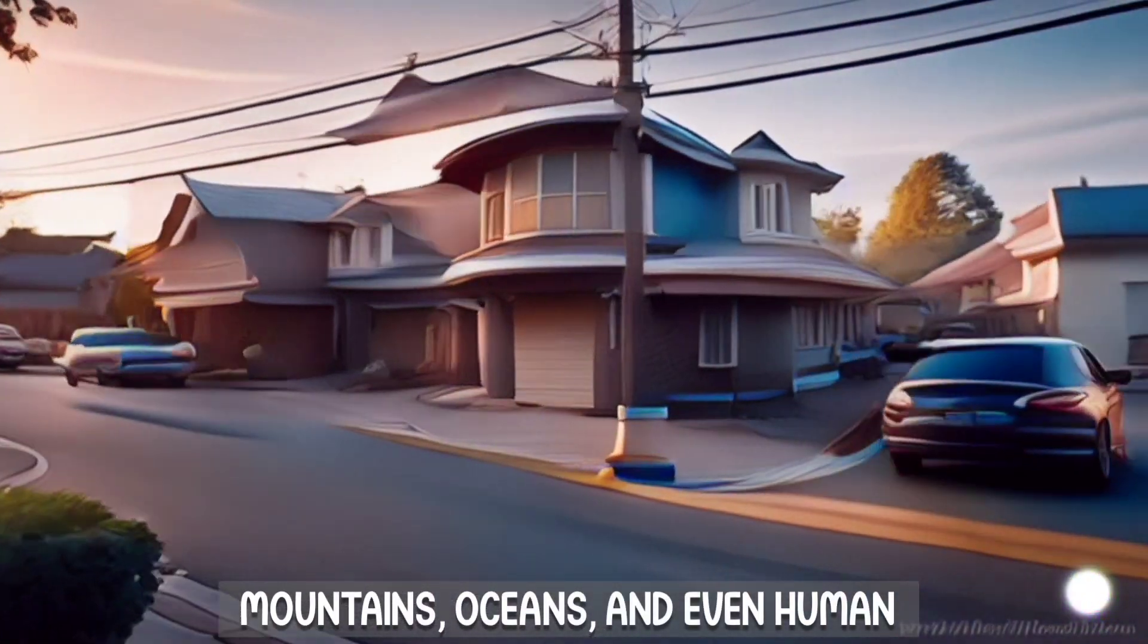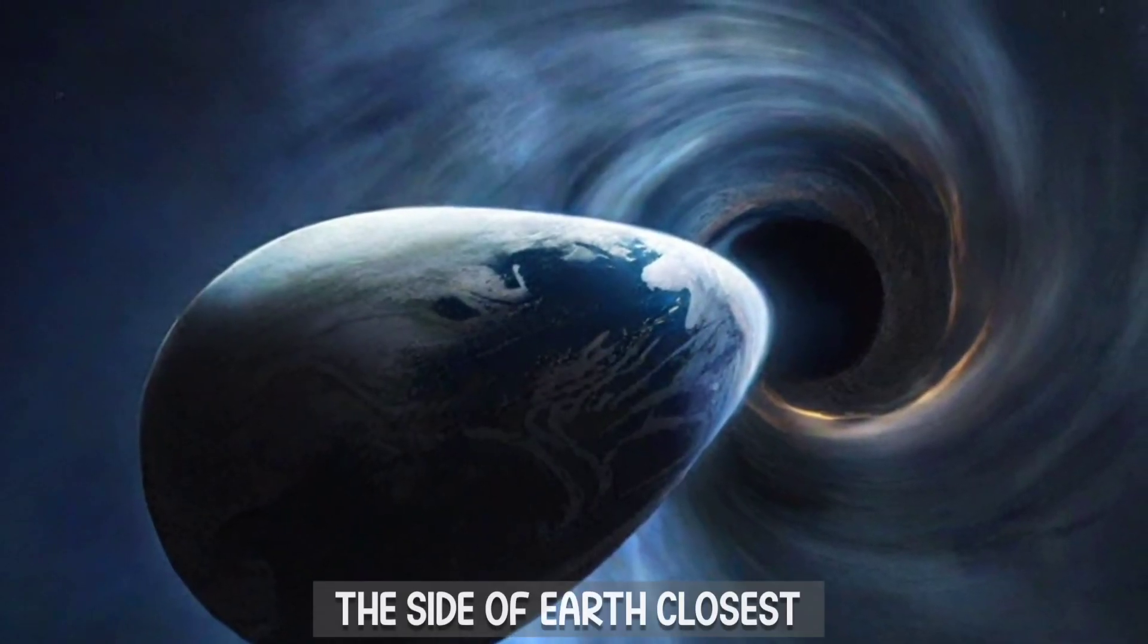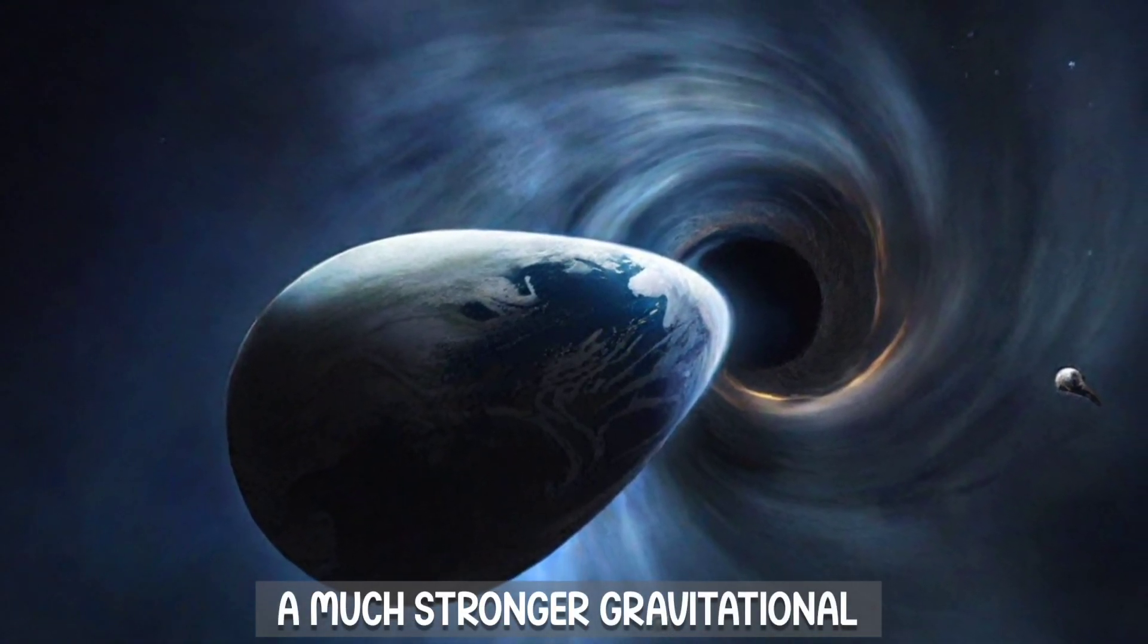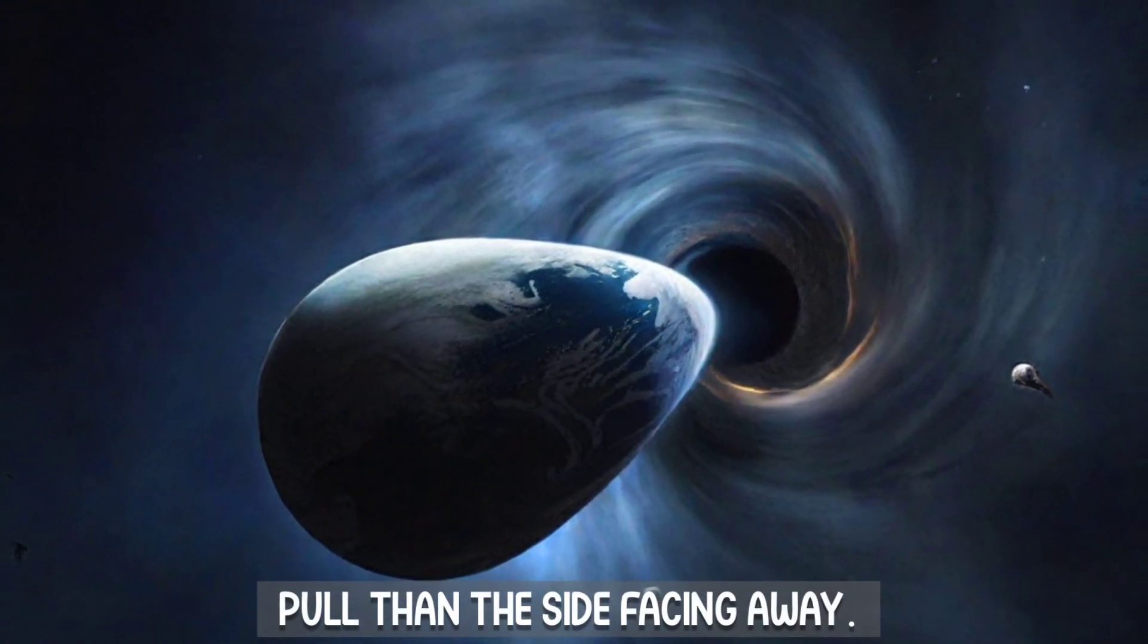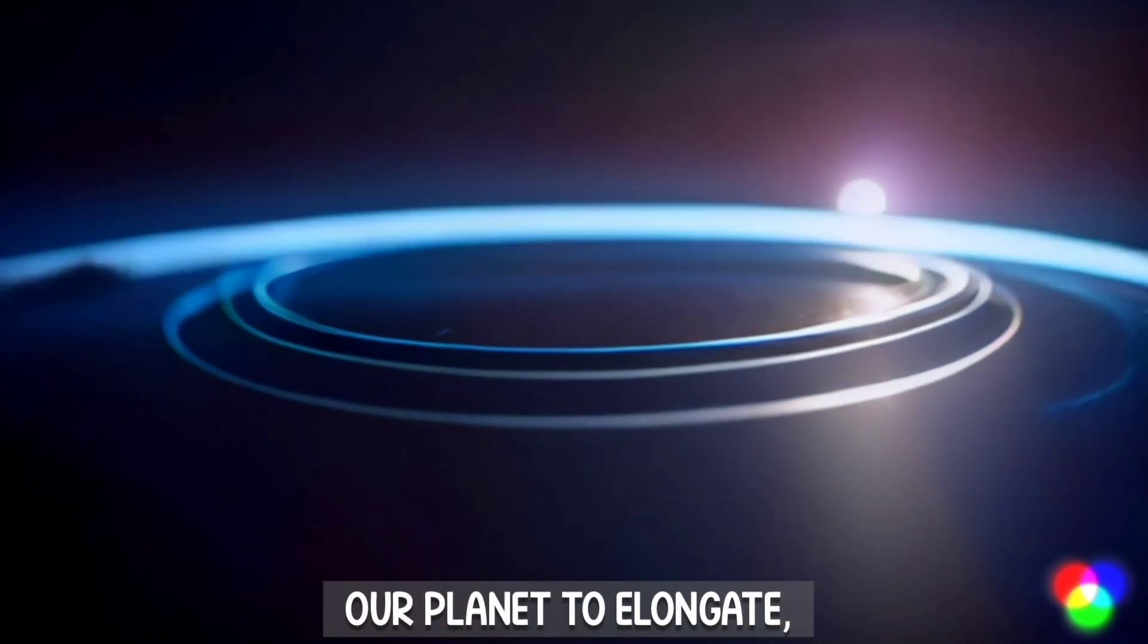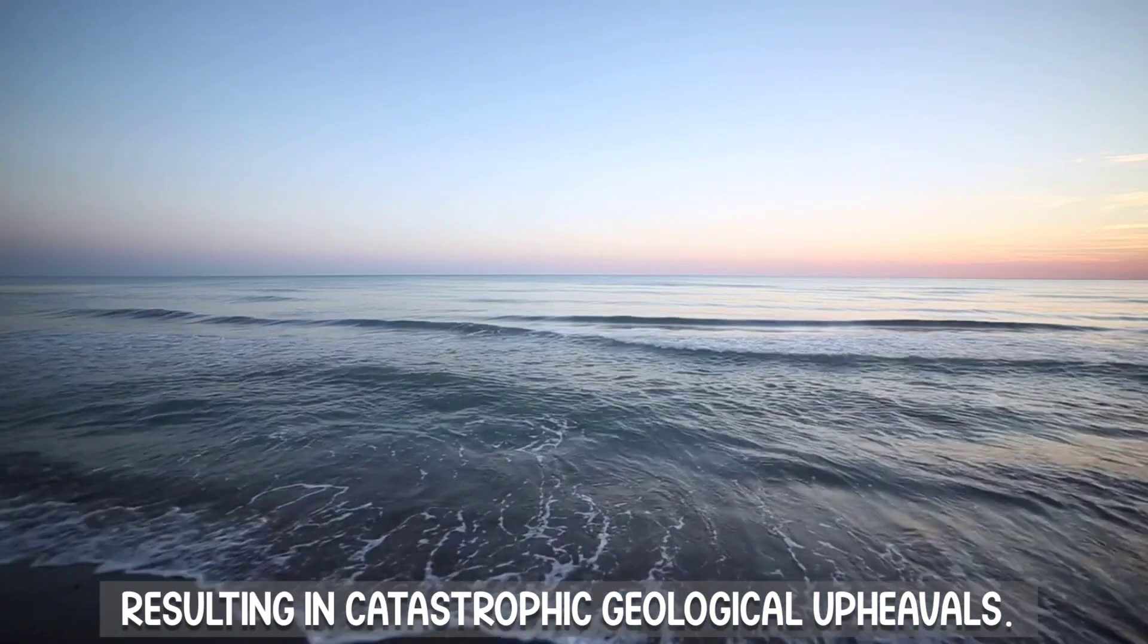Mountains, oceans, and even human beings would be subjected to extreme tidal forces. The side of Earth closest to the black hole would experience a much stronger gravitational pull than the side facing away. This gravitational gradient would cause our planet to elongate, resulting in catastrophic geological upheavals.